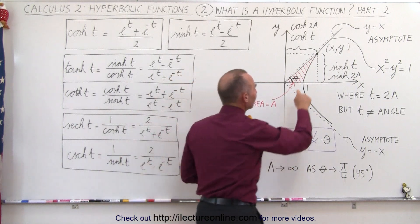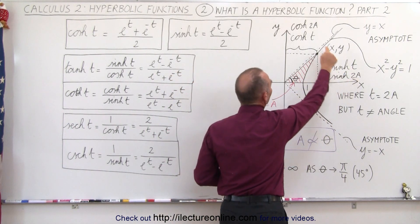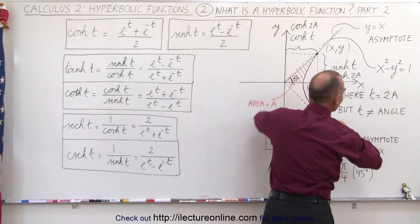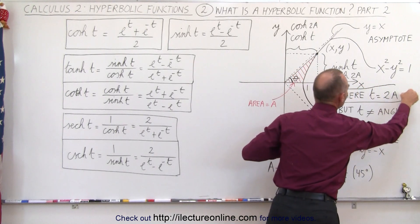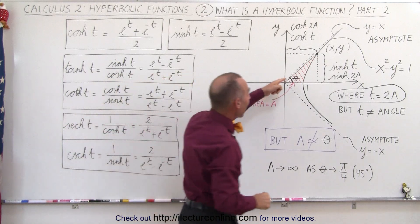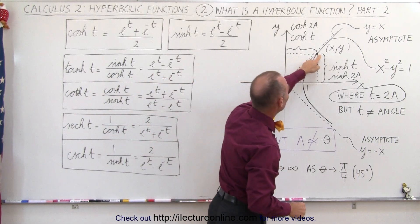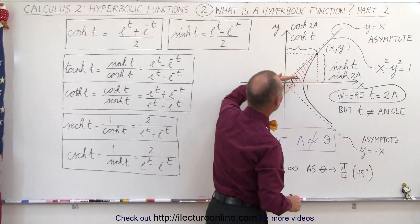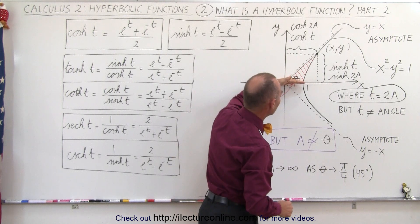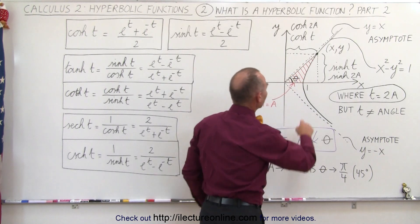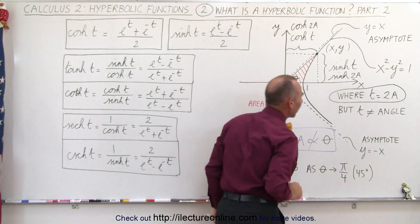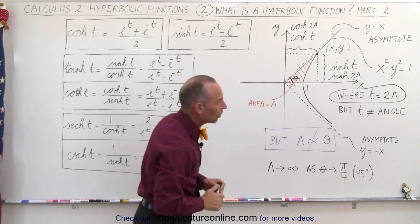We realize that t, the variable we use in the hyperbolic sine and cosine, is really equal to twice the area right here — so t is simply twice that area. We can also see that if the angle between the line reaching the x, y point and the x-axis goes to zero, then there's no area, and so the hyperbolic sine and cosine are relative to the size of that area.